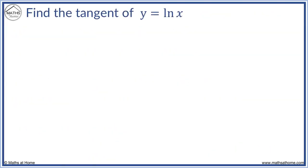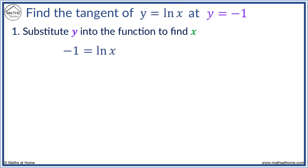Find the tangent of y equals ln x at y equals minus 1. This time we have y so we need x. We sub y equals minus 1 into y equals ln x to get minus 1 equals ln x. To solve this we remove ln by using e. We get e to the minus 1 equals x. We can rewrite this as x equals 1 over e, as the power of minus 1 means to divide by e here.